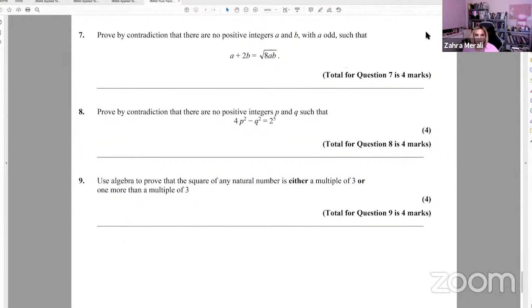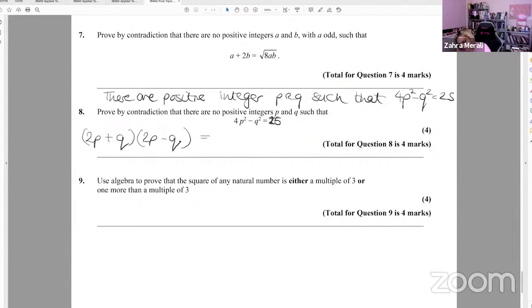Prove by contradiction that there are no positive integers p and q such that 2p squared minus q squared equals two to the, oh, okay, so there's a typo here. I don't know whether it's fixed in whatever you've seen, but that should say 25. So step one, you will say there are positive integers such that this can happen. So there are positive integers p and q such that 4p squared minus q squared equals 25. We're going to factorize that. Hopefully you see it's like a difference of two squares. And we think, how can we get 25? Well, the only ways to get 25 are 25 and 1, or 5 and 5.